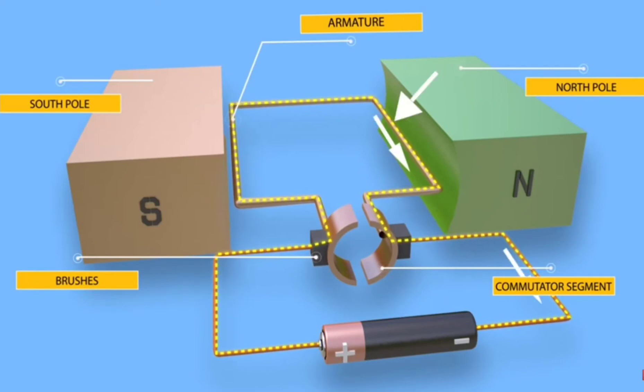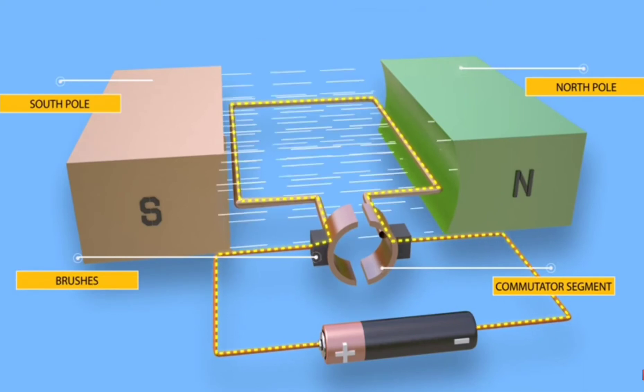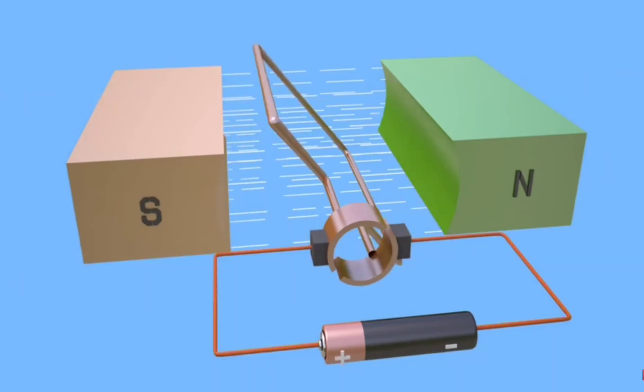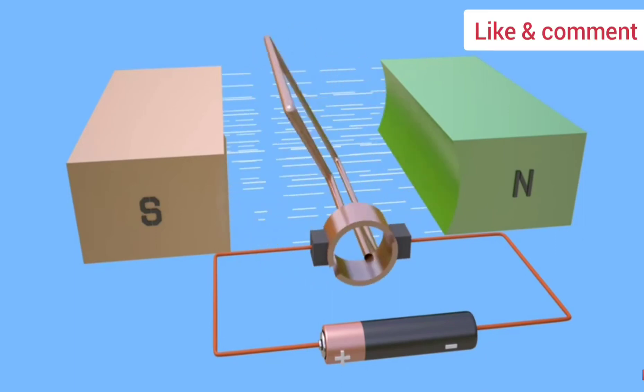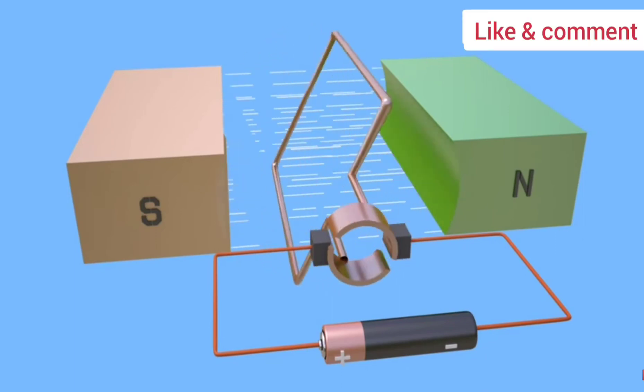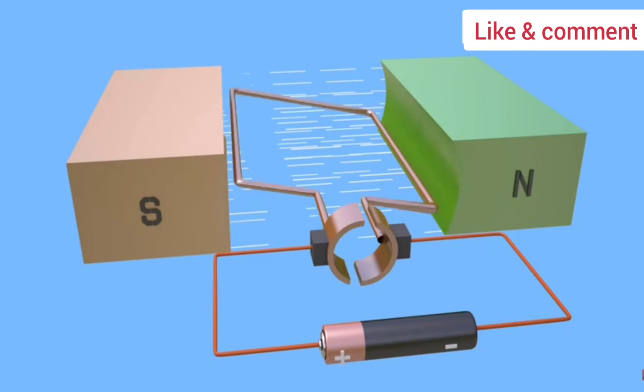As we see, the conductor is carrying current and is placed in a magnetic field. Both of them experience mechanical force acting on them. The direction of mechanical force can be easily determined by applying Fleming's left-hand rule.